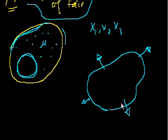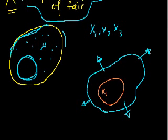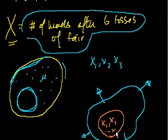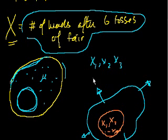Your sample is usually finite. Let's say we perform this experiment — toss a fair coin six times — and we do it 100 times. We'd have 100 samples: x1, x2, all the way to x100. I'm making this connection to show the link between random variables, probability, and the statistics we discussed earlier. In this video, I'm going to introduce you to the concept of the expected value of a random variable.